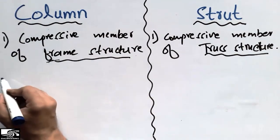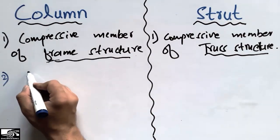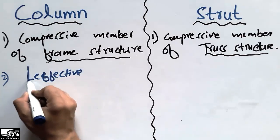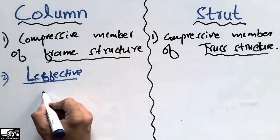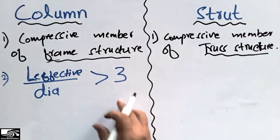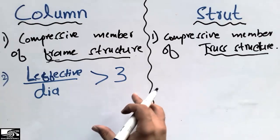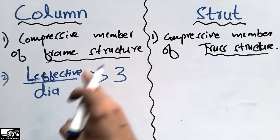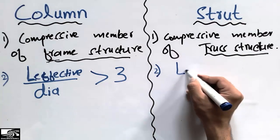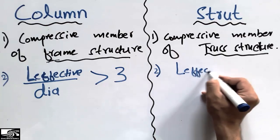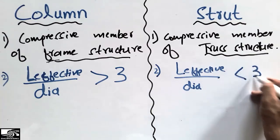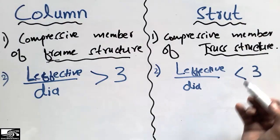The second difference is about the effective length to diameter ratio. For the column, the effective length of the column divided by the diameter of the column should always be greater than three — we call this type of member a column. While in the case of the strut, the effective length of the strut divided by the diameter of the strut should be less than three — we call this type of member a strut.